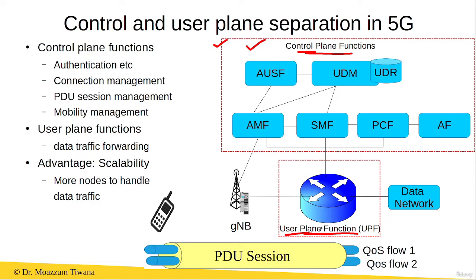The control plane is responsible for the authentication of the user equipment. For example, when you turn on your user equipment, or when the user equipment wants to make a call, it is authenticated by the control plane functions to determine that this is a genuine and legal user equipment wanting to use the services of the 5G network.